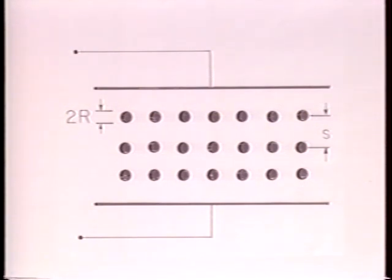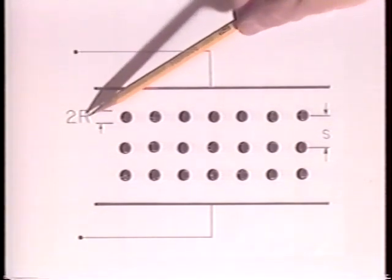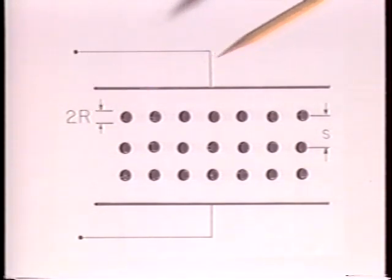This artificial dielectric is composed of what we can think of as molecules that are actually essentially perfectly conducting spheres. Each has radius r and they're in a cubic array with spacing s.